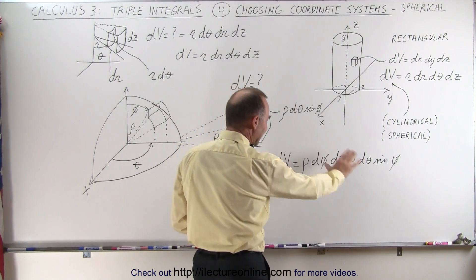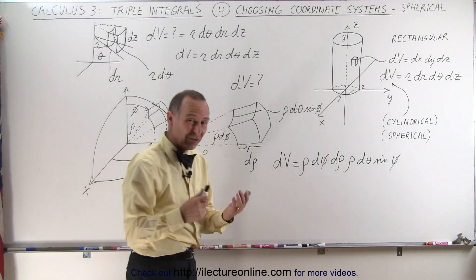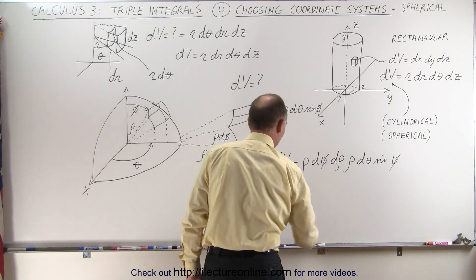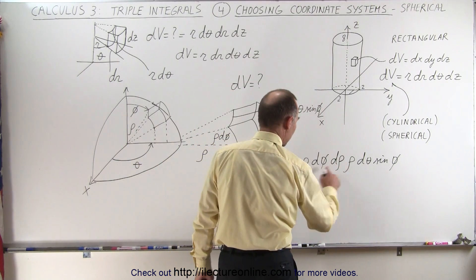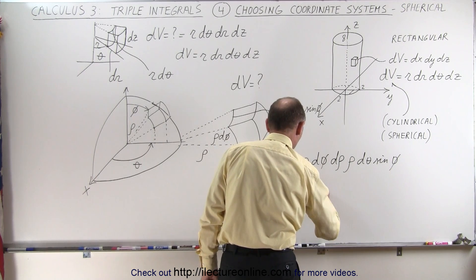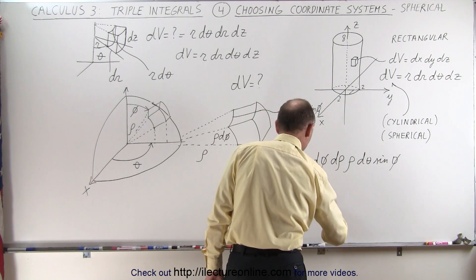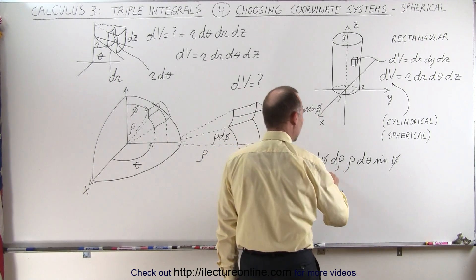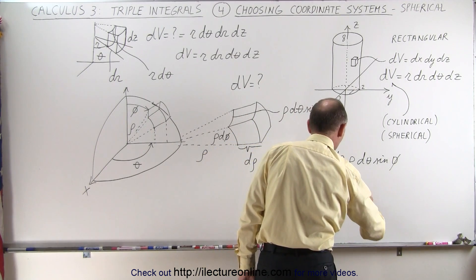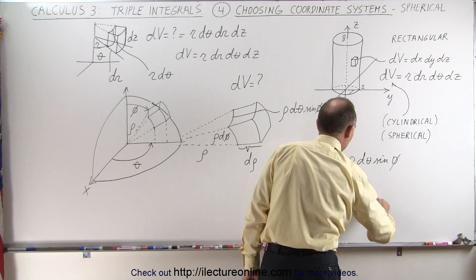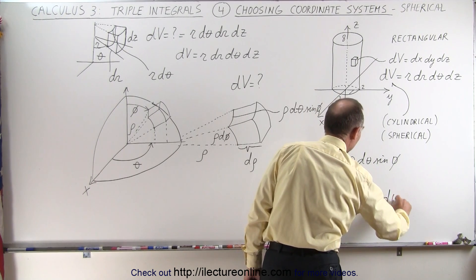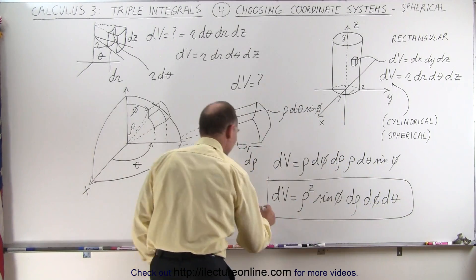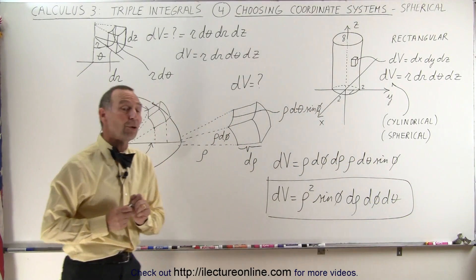And then typically we take this and we rearrange them so that it's a more practical order. So we write the volume element in spherical coordinates. We first collect the rhos here. So we have rho squared. We collect the sine of phi. And now we have the d rho, d phi, d theta. So we go d rho, d phi, and d theta at the end. And so that's how we express our volume element in spherical coordinates.